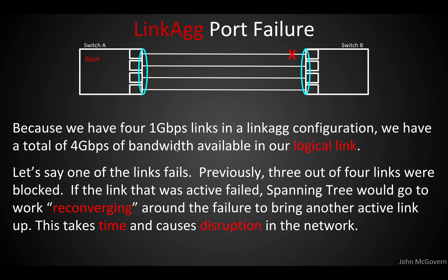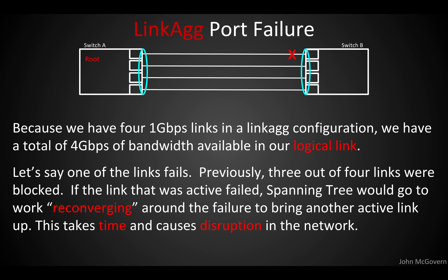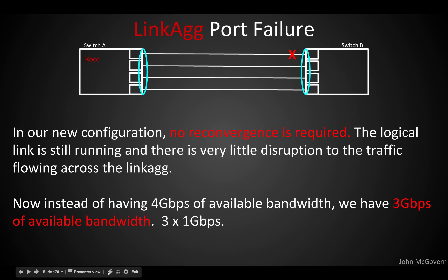With four one-gigabit links, we have four gigabits of bandwidth available in our logical link — a four-gigabit link ag. For different manufacturers that limit is different; sometimes you can have eight connections in a link ag. Now let's say one physical link fails. Previously, spanning tree would have to reconverge around the failure, which takes time and disrupts the network.